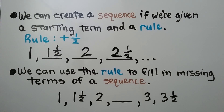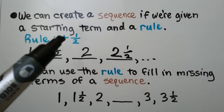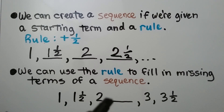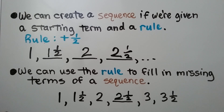We can use the rule to fill in missing terms of a sequence. If we know the rule is plus one half and it shows two here, we know this must be two and a half. Knowing the rule can help us complete a sequence, or it can help us find a missing term of a sequence.